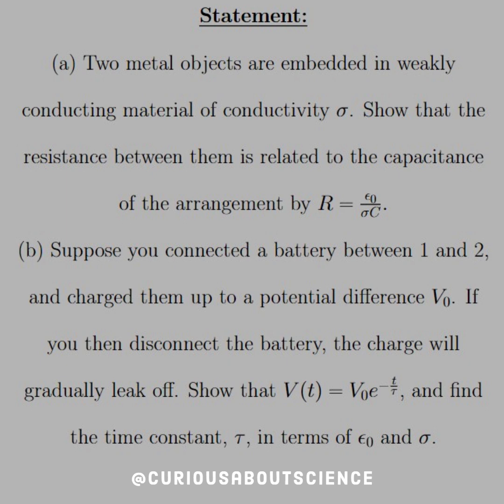The statement for this one reads: Two metal objects are embedded in a weakly conducting material of conductivity sigma. Show that the resistance between them is related to the capacitance of the arrangement by R equals epsilon-not over sigma times C. Part B says,